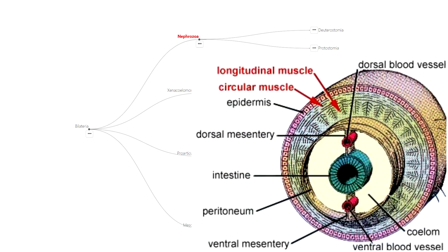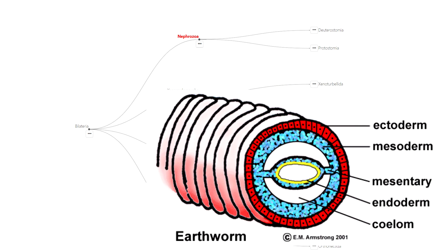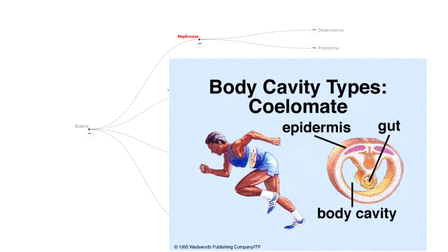The coelom is a fluid-filled body cavity lined with mesoderm which separates the digestive tract from the outer body wall. A lining of mesenteries connect the inner and outer mesoderm layers and suspend the internal organs in the coelom. The adaptive advantages of this body cavity are that it cushions the organs, preventing internal injuries, and allows them to grow independent of the body wall. The non-compressible internal fluid also acts as a hydrostatic skeleton.